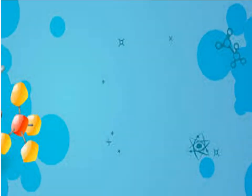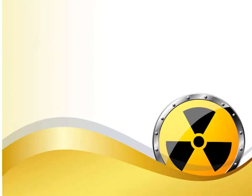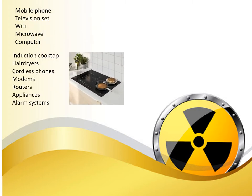This is the benefits and hazards of electromagnetic waves — telecommunications, PCA, and electrical. What are the uses of this? In mobile phones, television sets, Wi-Fi, microwave, computers, induction cooktops, hair dryers, cordless phones, modems, routers, appliances, and alarm systems.